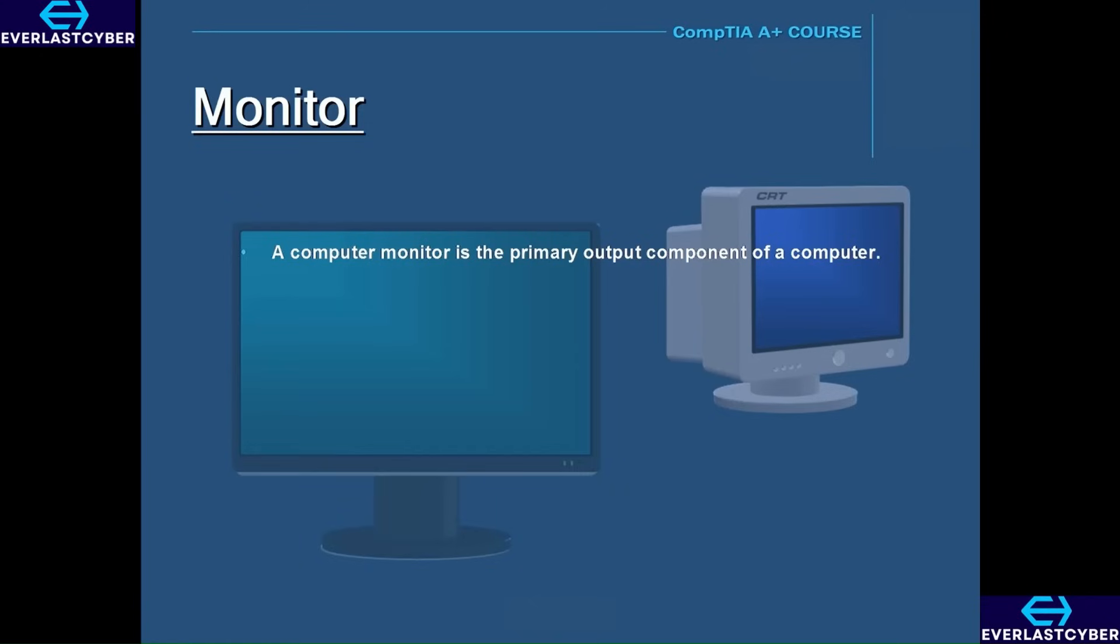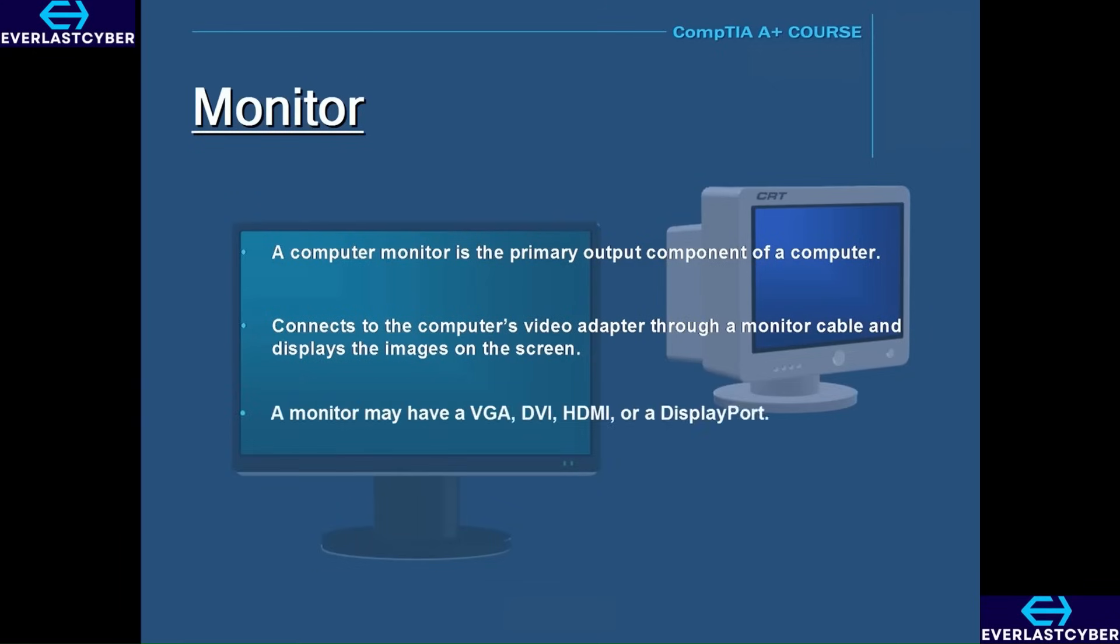A computer monitor is the primary output component of a computer. It connects to the computer's video adapter through a monitor cable and displays images on the screen. A computer monitor may have a VGA, DVI, HDMI or a DisplayPort.